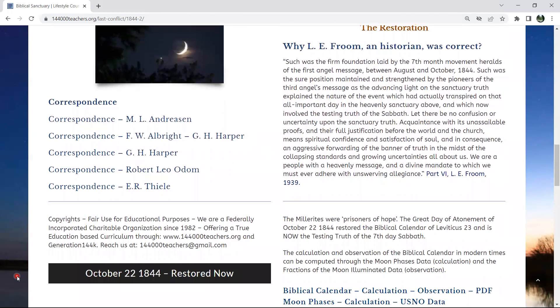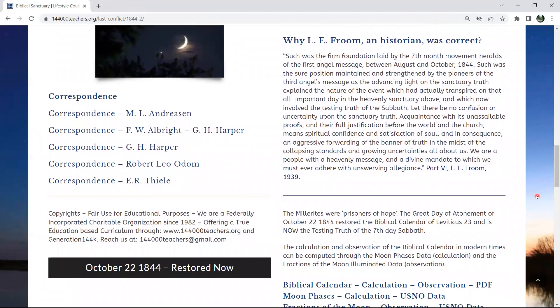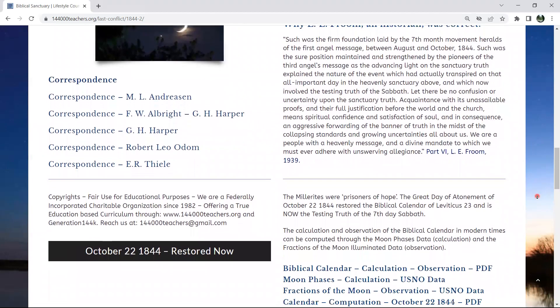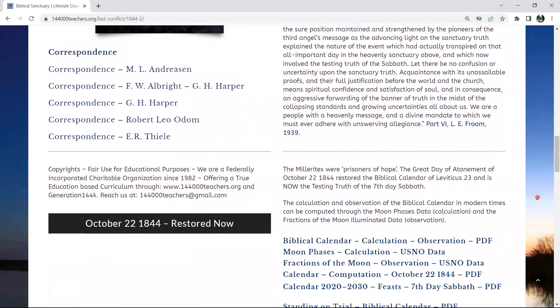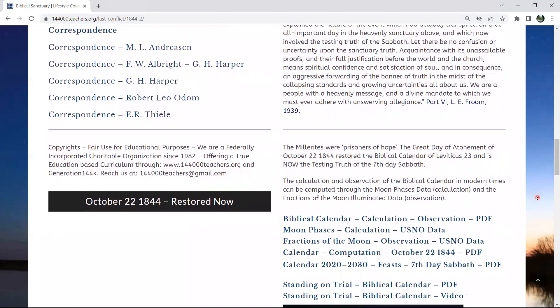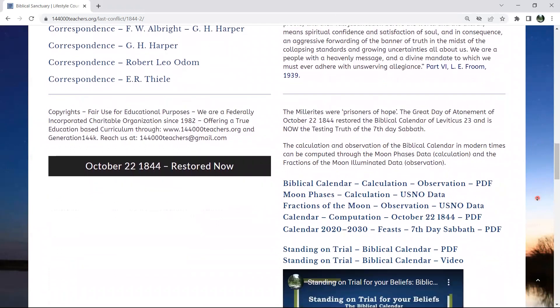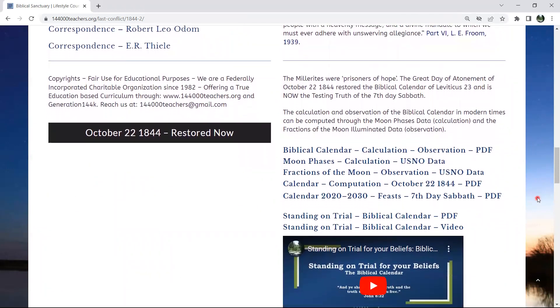But it has just been uploaded in the past years. In order for you to see the complete collection, we encourage you to visit the website of 144,000teachers.org in order to see what is presented in this page of 1844 in the menu and what is being restored. The Millerites were prisoners of hope. The great day of atonement of October 22nd, 1844,